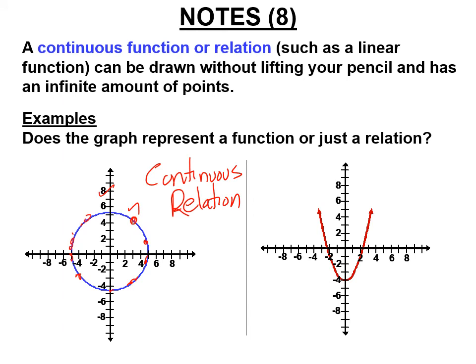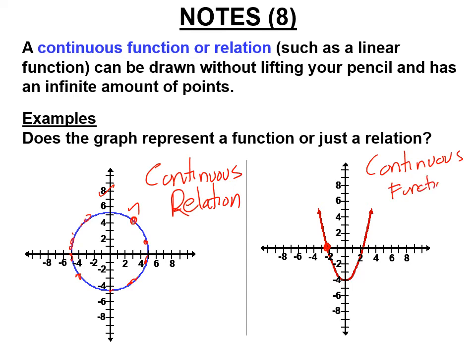This U-shape is called a parabola. It's continuous. Drawing a vertical line anywhere through it hits only one point. Even as the shape extends outward forever, any vertical line hits it just once. So a parabola is continuous and is a function. We'll spend several weeks studying this continuous function in the second semester.